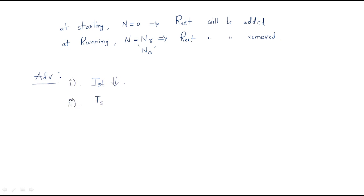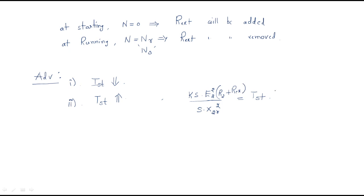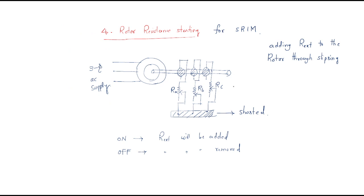The starting torque formula is Ks × E2² × R2 / (R2² + X2²). When external rotor resistance is added, the starting torque improves. When the starting torque improves, the three-phase induction motor reaches synchronous speed in less time. This is the most important method in the case of slip ring induction motors.